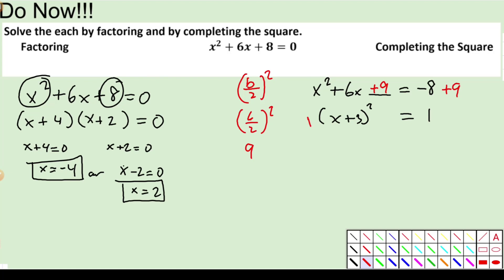And then we will get x plus 3 squared equals 1. And then we'll solve this guy. x plus 3 is equal to plus or minus the square root of 1. And we'll get x is equal to negative 3 plus or minus the square root of 1. But remember, what's the square root of 1?